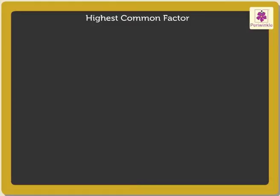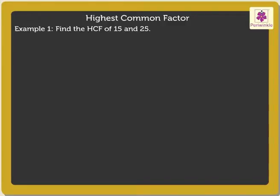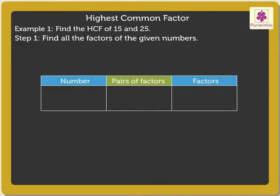To understand it in a better way, let us solve an example: find the HCF of 15 and 25. We will follow a three-step process to find the highest common factor. Step 1: find all the factors of the given numbers.